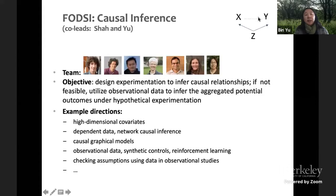The plan for this theme is to design experimentation to infer causal relationships and work with observational data to infer aggregated potential outcomes and do hypothetical experimentation. In particular, we're interested in high dimensional covariates dealing with data with network inference.